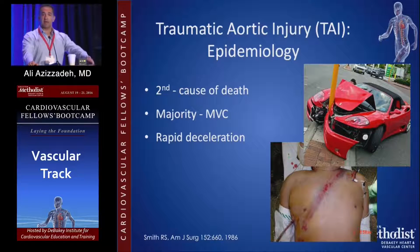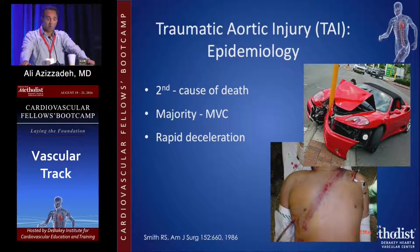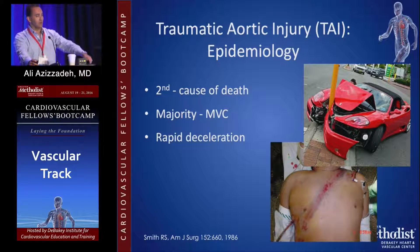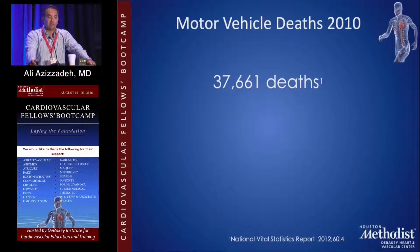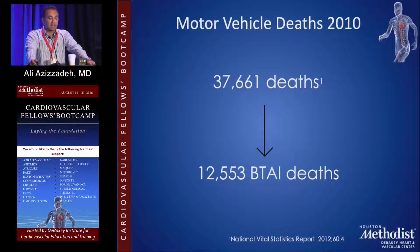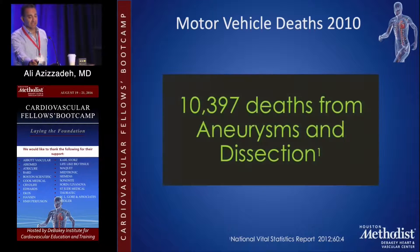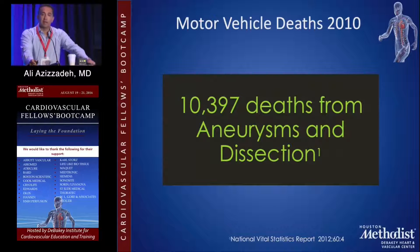A couple words about epidemiology: this is the second most common cause of death after blunt trauma — number one is head injury. The majority are related to motor vehicle collisions. Looking at motor vehicle deaths in 2010, there were 37,000 deaths reported, and about a third are related to traumatic aortic injury. Comparing that to aneurysms and dissections in the same year — 10,400 — it's almost larger than the number of people dying from aneurysm and dissection.